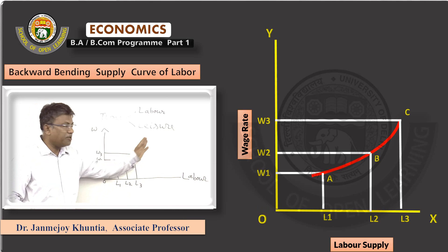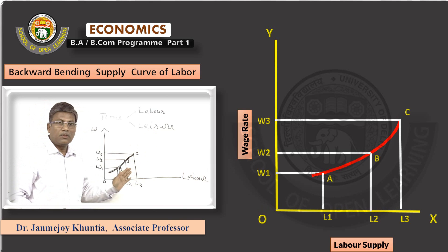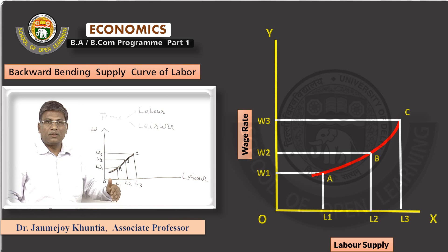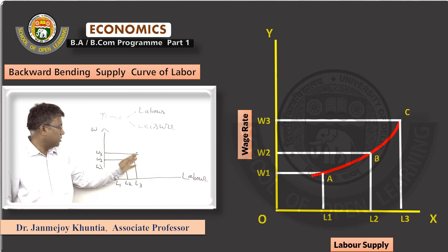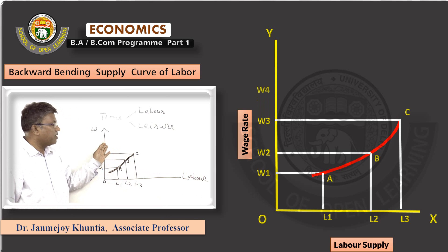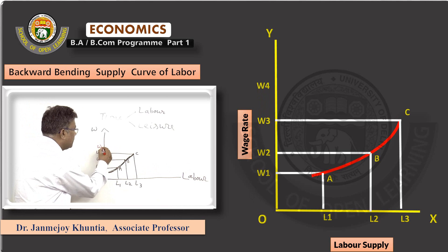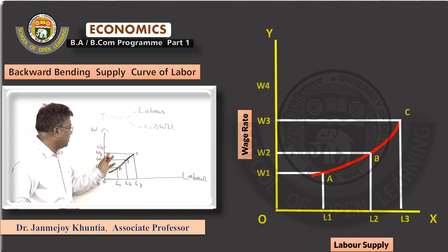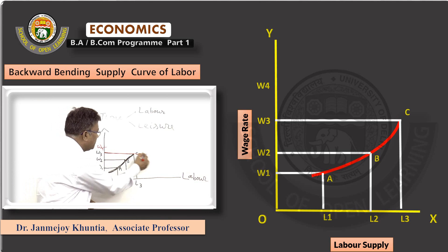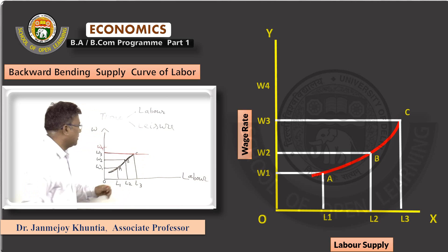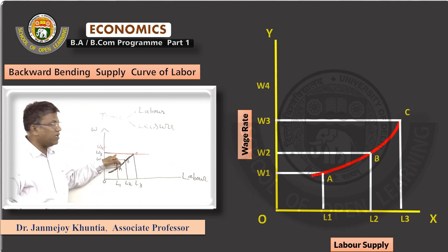But can this continue? The upward sloping curve may not continue at a very high wage rate. Let us say the wage rate further increases to W4. After the W3 wage rate, the individual has enough money.